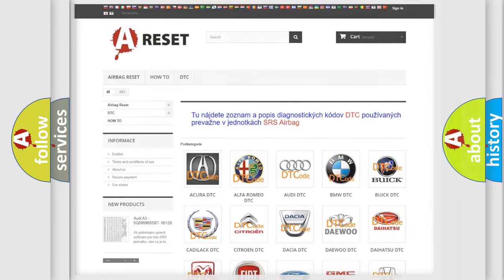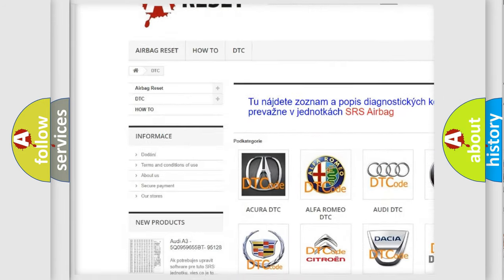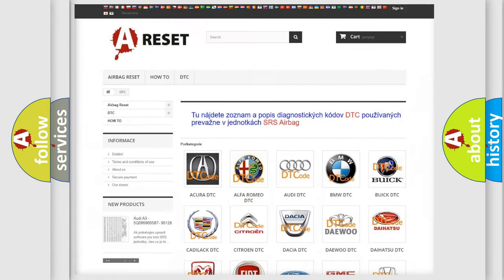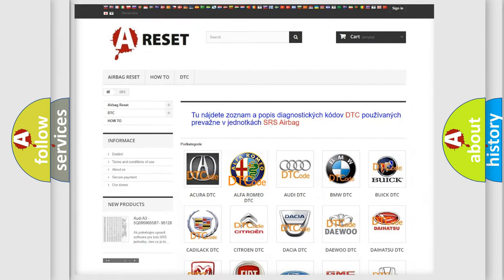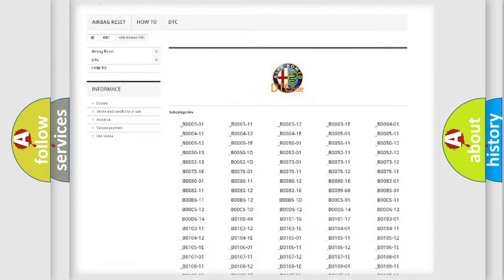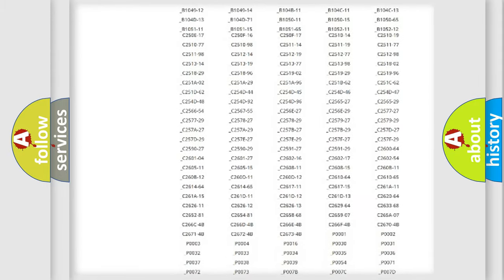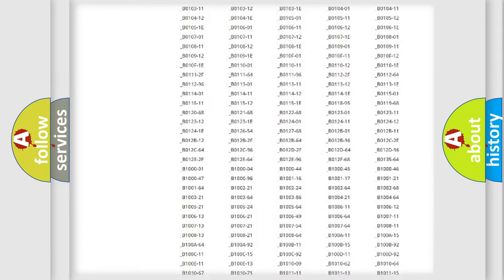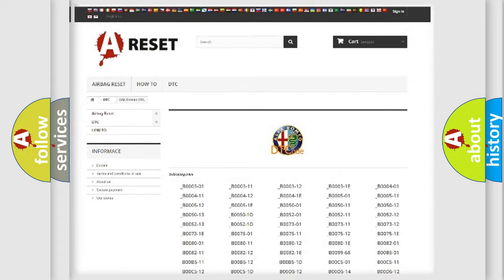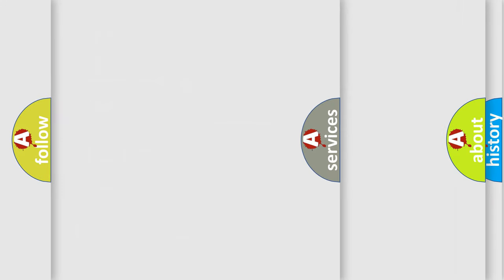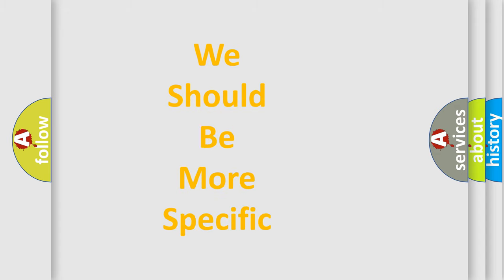Our website airbagreset.sk produces useful videos for you. You do not have to go through the OBD2 protocol anymore to know how to troubleshoot any car breakdown. You will find all the diagnostic codes that can be diagnosed in Alfa Romeo vehicles, and many other useful things.